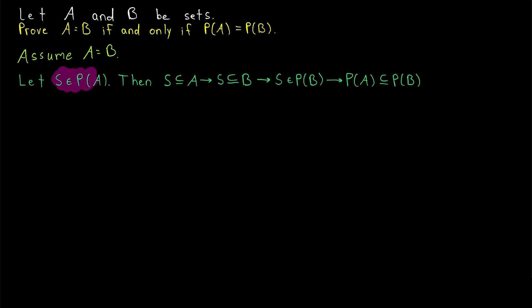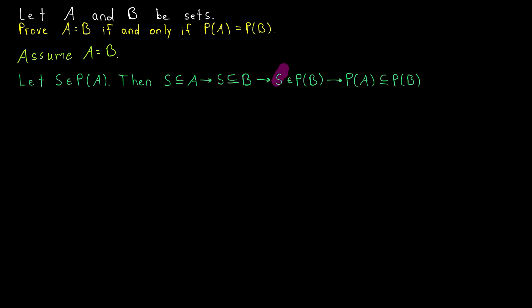If S is an element of the power set of A, by definition that means that S is a subset of A, because the power set just contains all the subsets. So S must be a subset of A, but we're assuming that A and B are equal. Thus S is a subset of B. But then, by definition of power set, that means S is an element of the power set of B. So we've shown any element of the power set of A must also be an element of the power set of B. Thus, the power set of A is a subset of the power set of B.